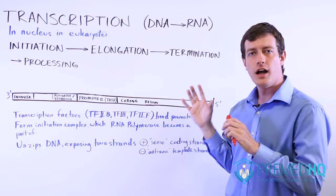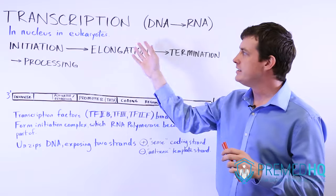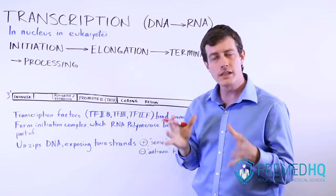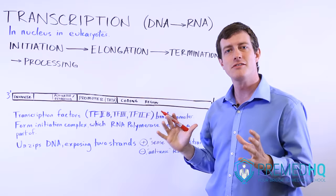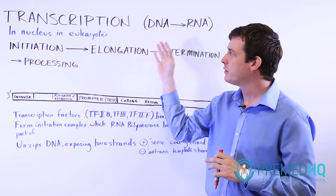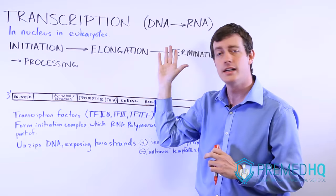This occurs in the nucleus in eukaryotes, and the reason for that is that DNA doesn't leave the nucleus. So in order for you to use DNA as a template, you have to have transcription occurring in the nucleus.